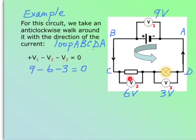Here is a simple example. For this circuit, we take an anti-clockwise walk around it with the direction of the current. The current is flowing this way, anti-clockwise, so we'll follow the current. And the loop is called A, B, C, D, A.